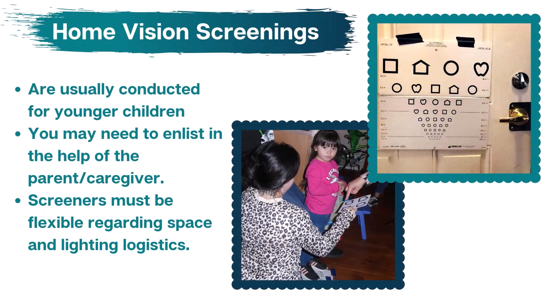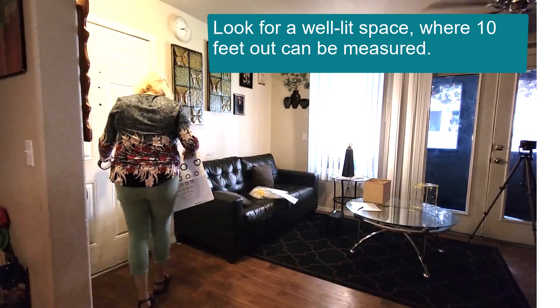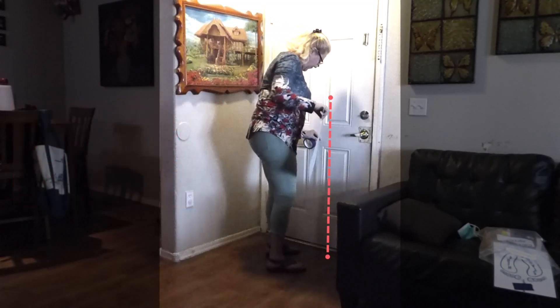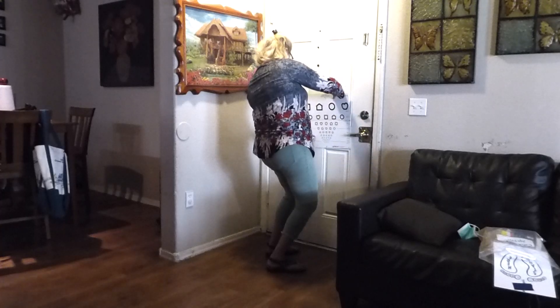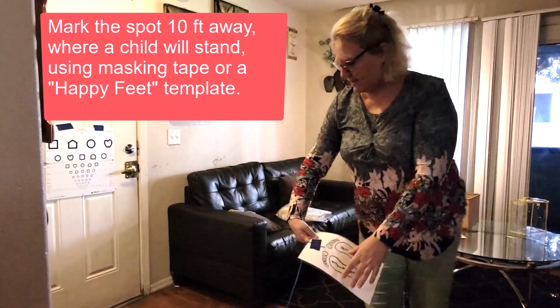A home visit differs from a community or school setting in some ways. Typically, the children in a home visit are much younger, and the vision screener must demonstrate flexibility with the space and lighting logistics. In the home, the screener should look for a well-lit space where the acuity chart can be placed on a white wall or door with the child able to stand 10 feet away — this may require moving furniture. Just as in a school setting, the screener will measure and mark 10 feet from the chart with tape or a Happy Feet template.